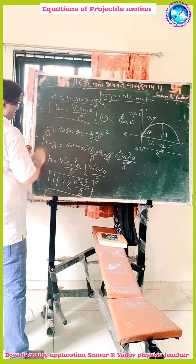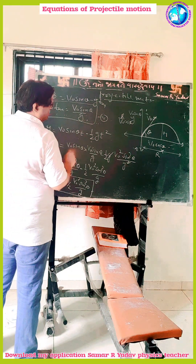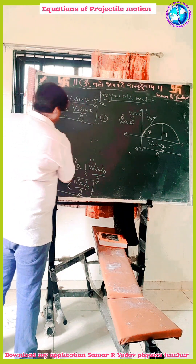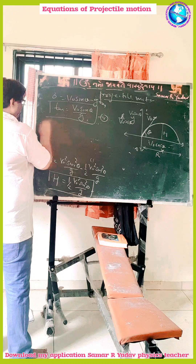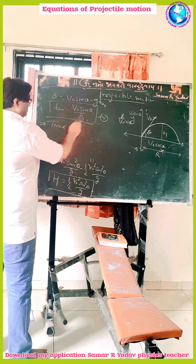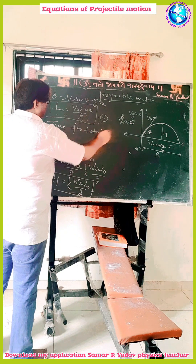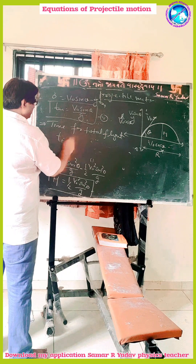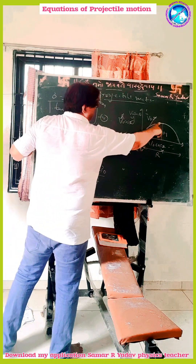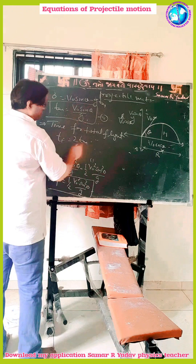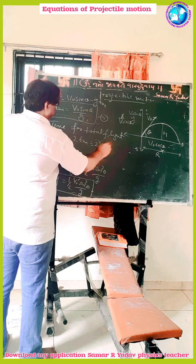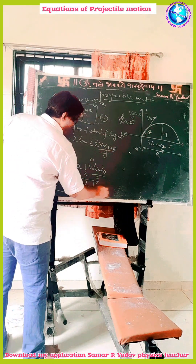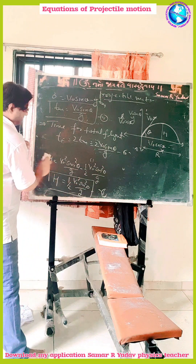Now we find the time for the total flight. The total flight time tf is twice the time to reach maximum height tm, so tf = 2 v0 sin theta upon g. This is equation 5 and equation 6.